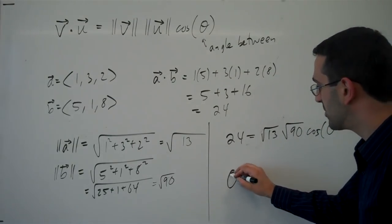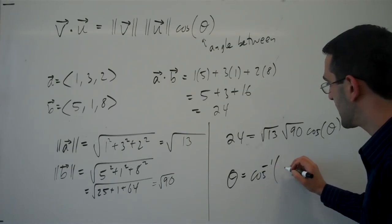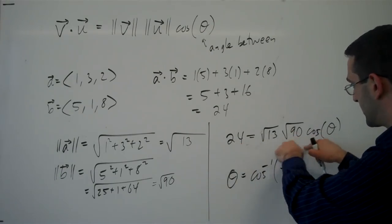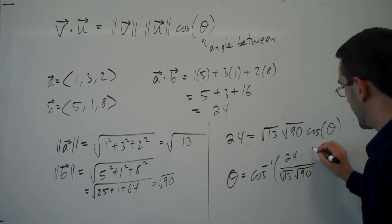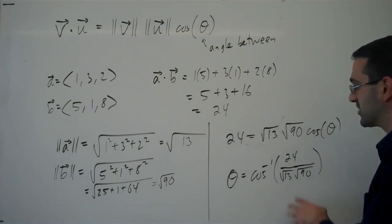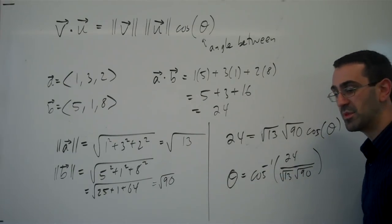And so the angle between these vectors would be the inverse cosine of 24, divided by root 13 root 90. The cosine inverse will give me the angle between these vectors.